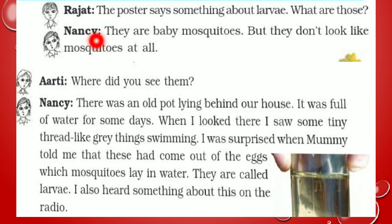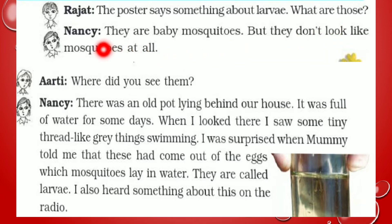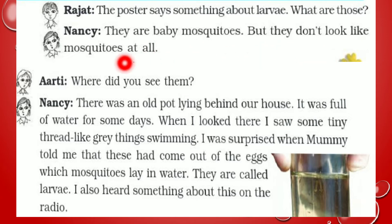Rajat says the poster says something about larva. ये poster कुछ larva के बारे में भी बता रहा है. What are those? ये सब क्या होते हैं? Nancy कहती है — they are baby mosquitoes. ये baby mosquitoes हैं. But they don't look like mosquitoes at all. लेकिन ये mosquitoes जैसे दिखाई नहीं देते हैं.